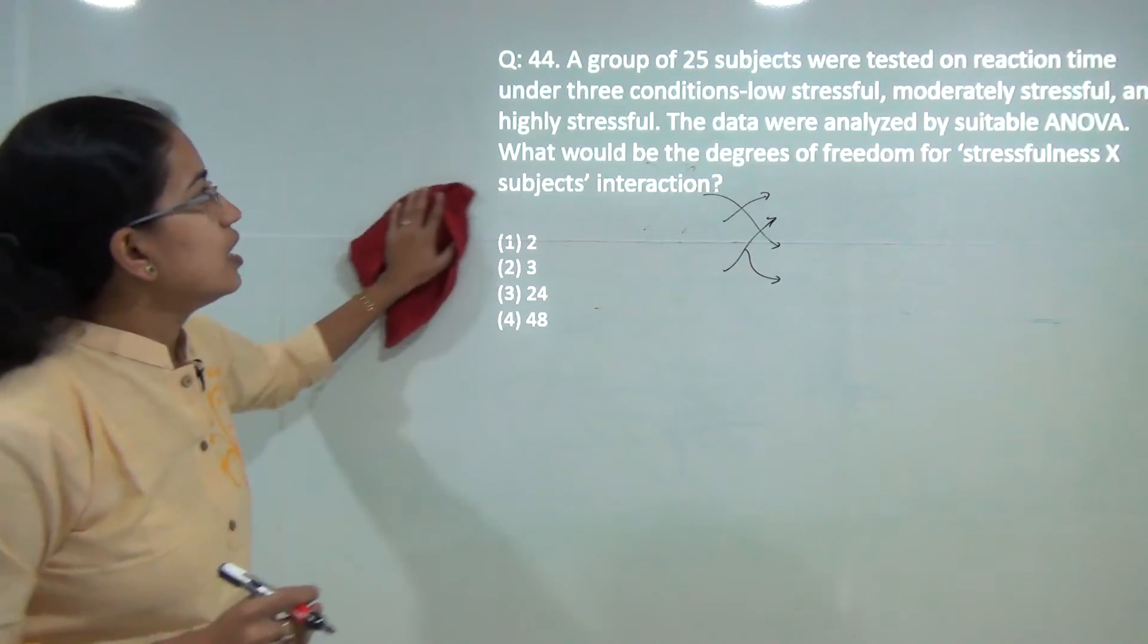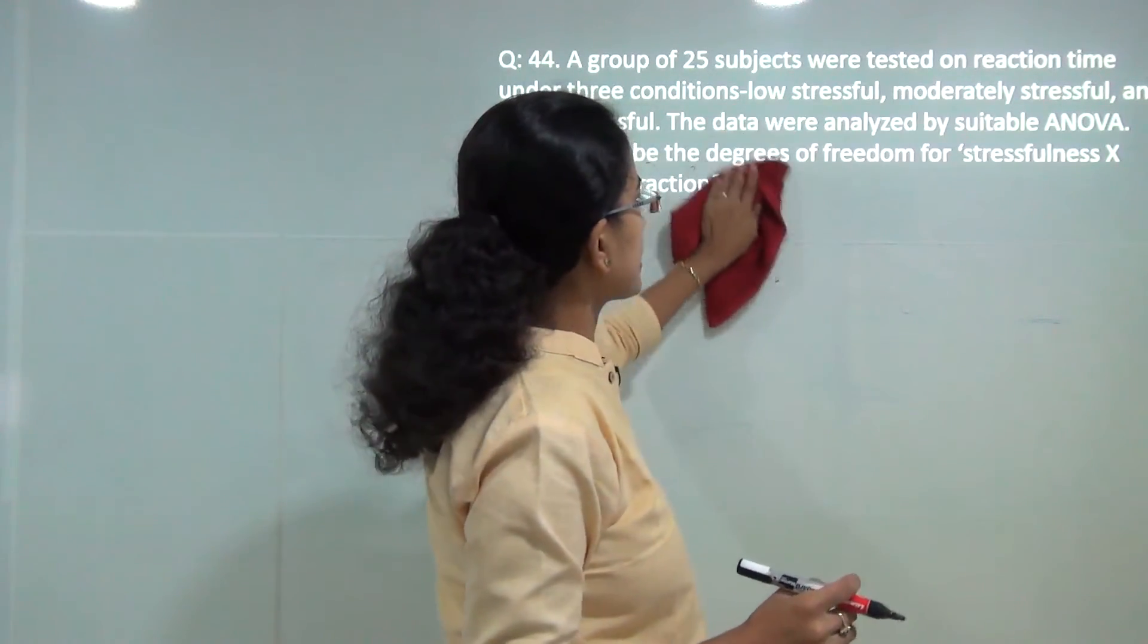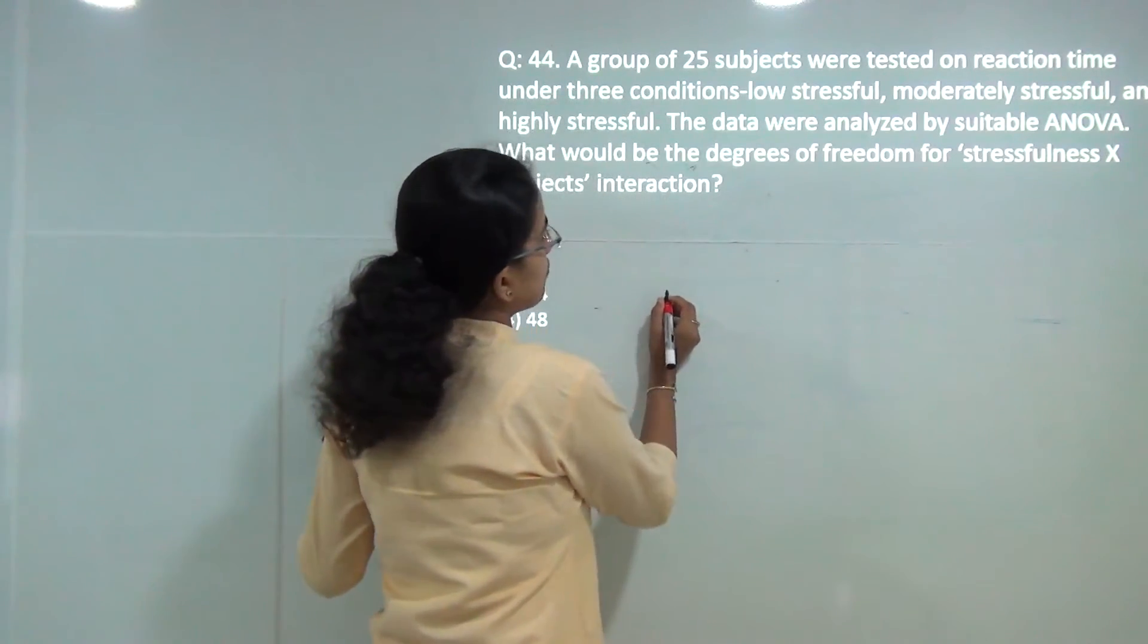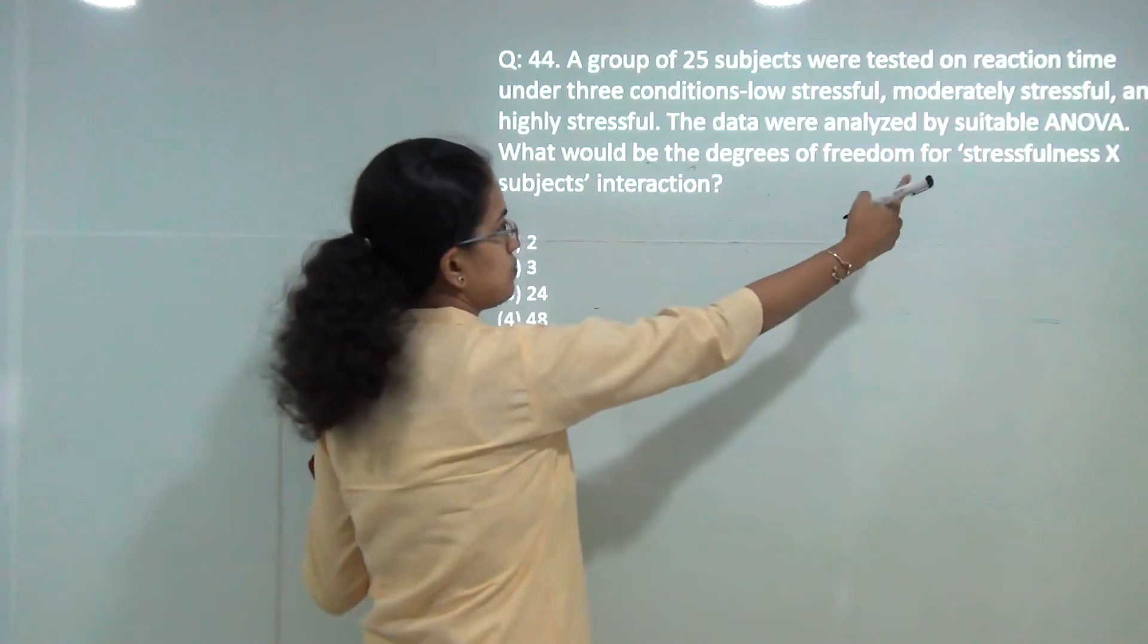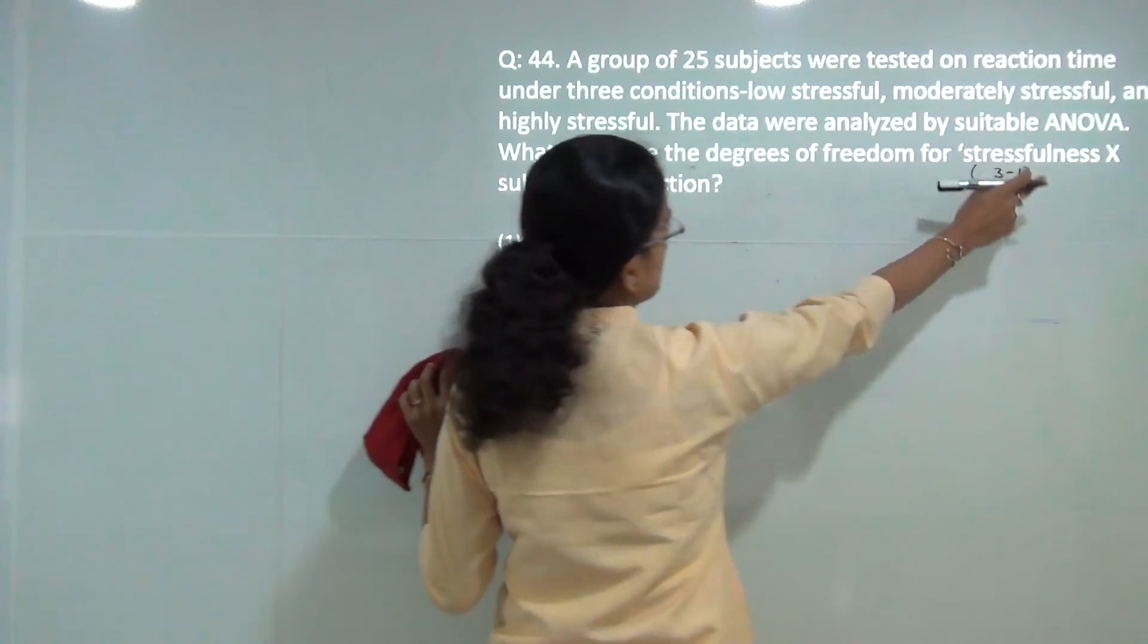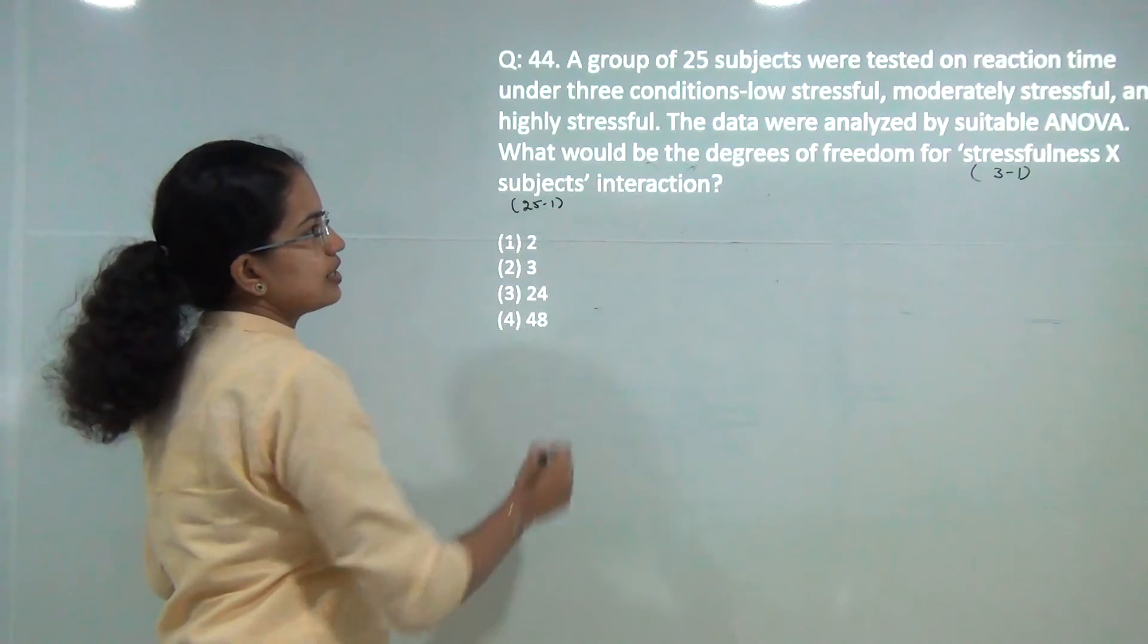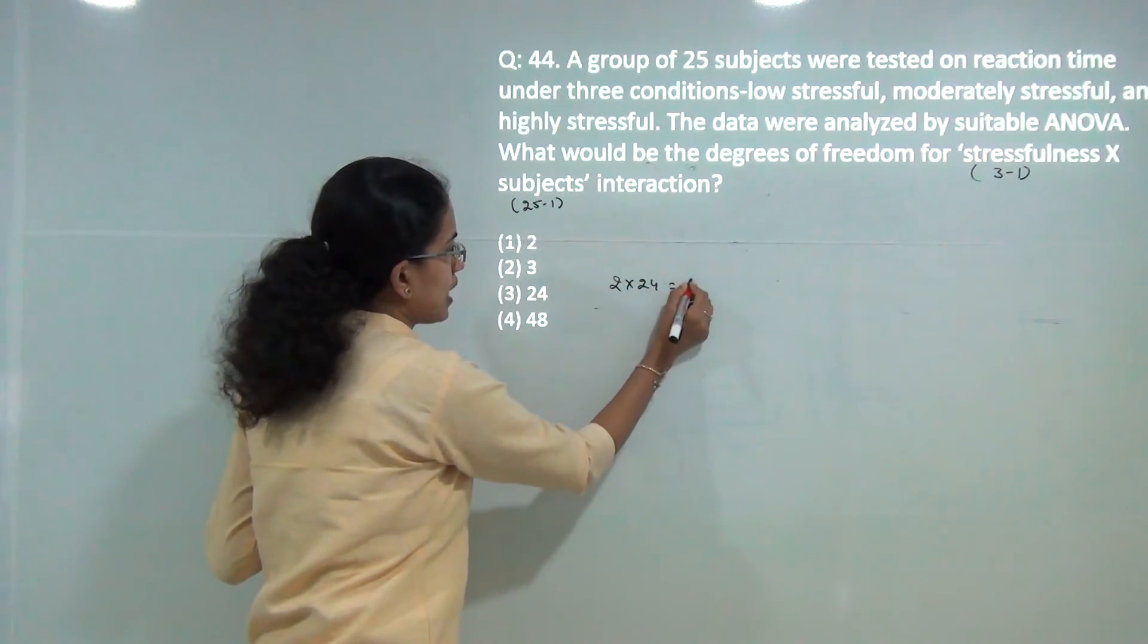Next question: you have 25 subjects which are categorized under three groups of stress. You have to find out the degree of freedom of stressfulness versus the subject. For stressfulness, the degree of freedom would be 3 minus 1 because there are three types of stress, and for subjects it would be 25 minus 1, and then you multiply those. So you have 2 into 24, that is 48.